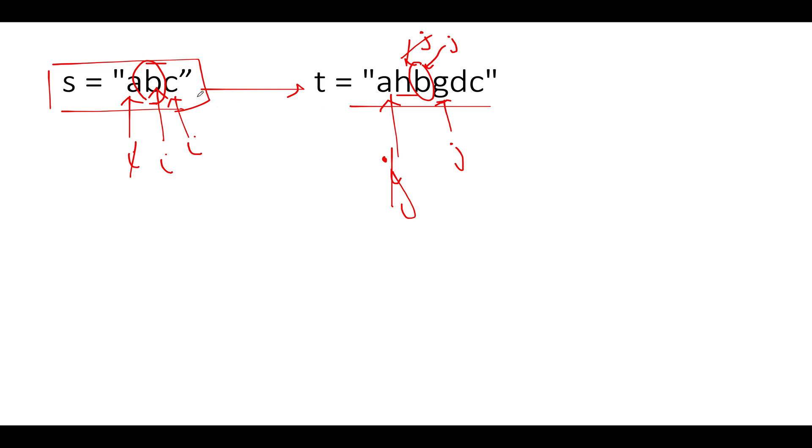So it gets incremented to d. d is also not equal to c. Again, it gets incremented to c. Here we see that it's a matching case—c matches with c. As a result, we will simply increment the s pointer, which is i. And since we have found all the elements of s in t, it's a happy case.